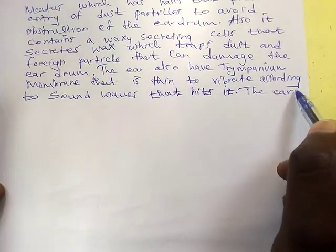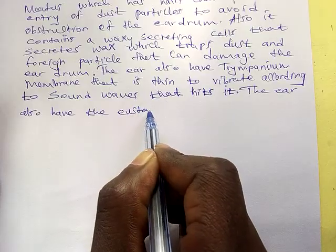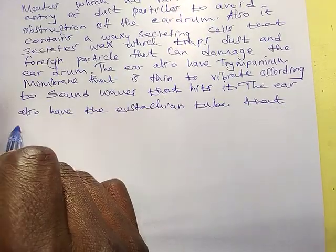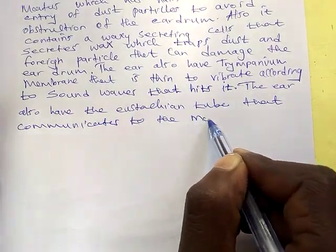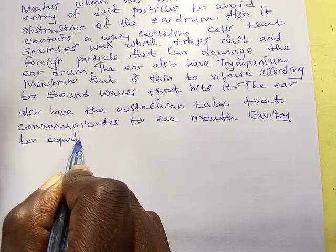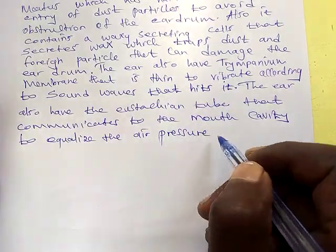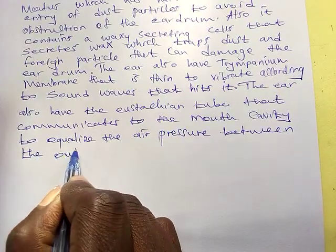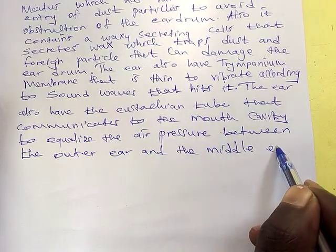The ear also has the Eustachian tube, which communicates with the mouth — the oral cavity — to equalize the air pressure between the outer and the middle ear.